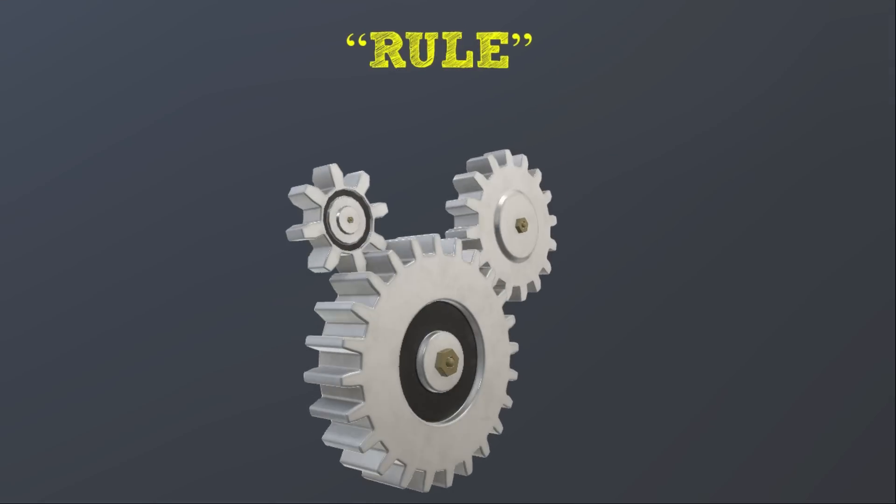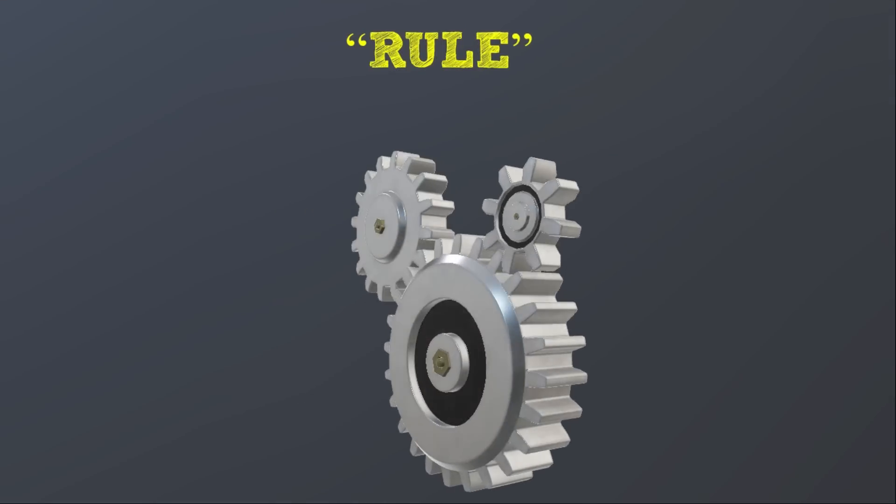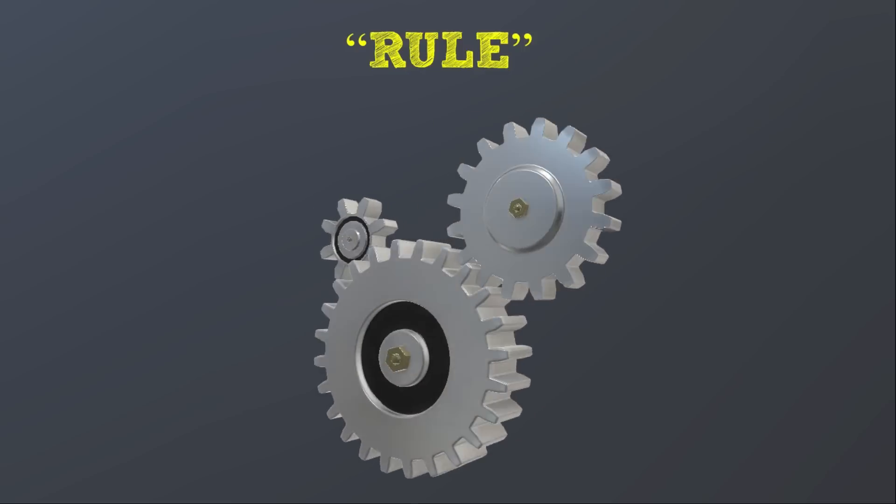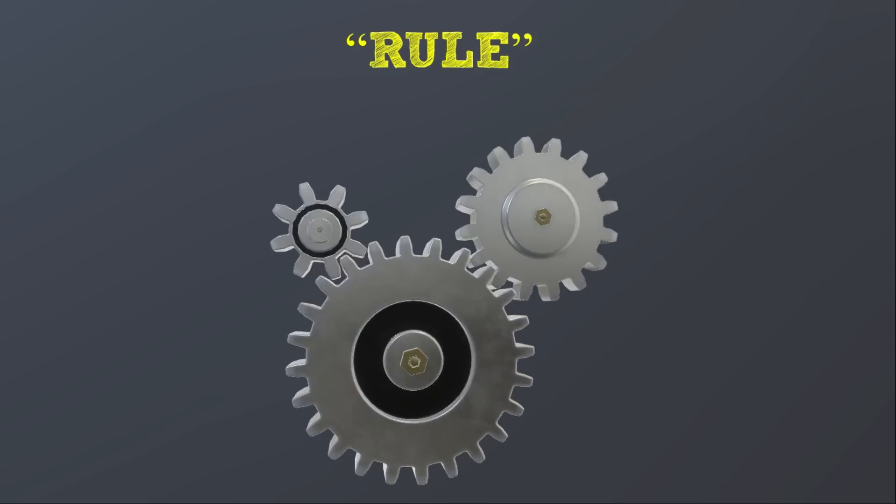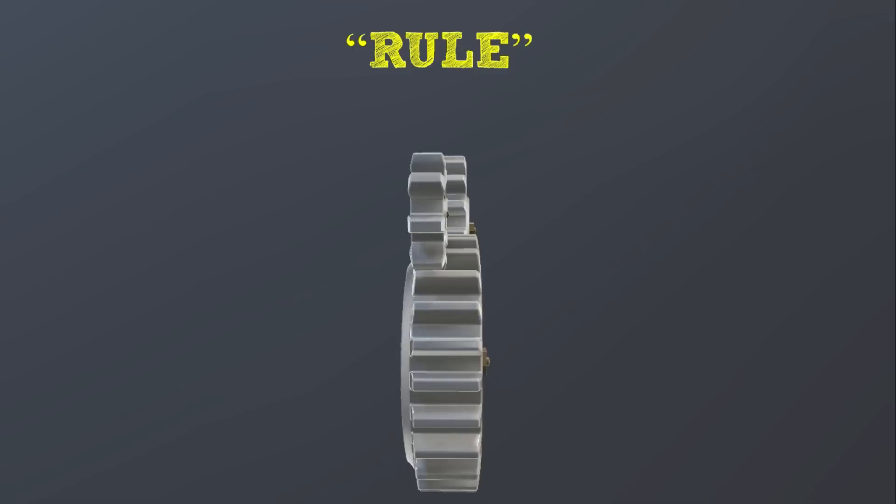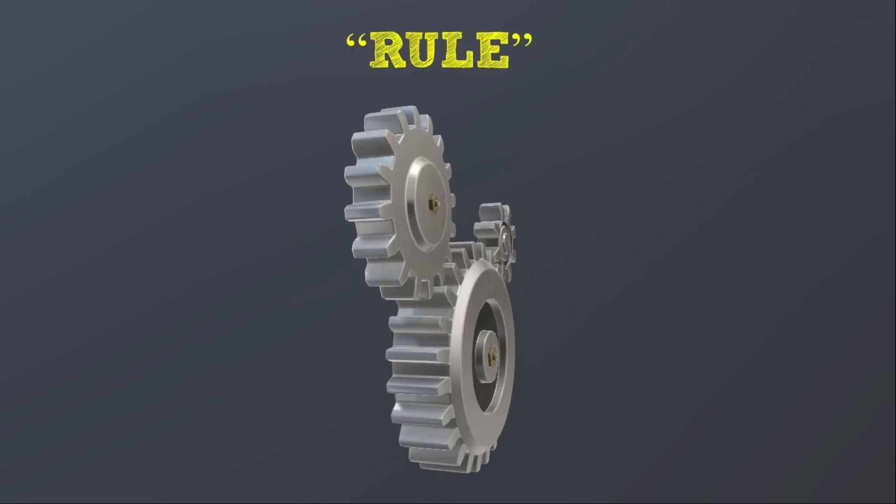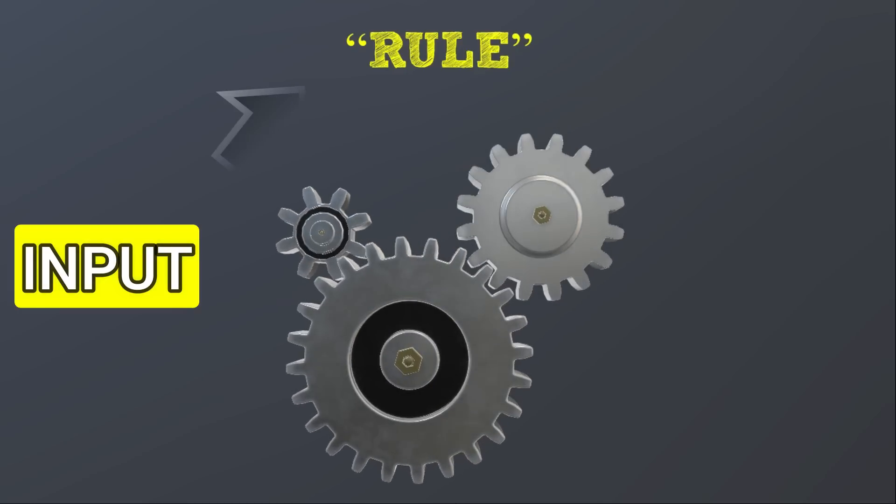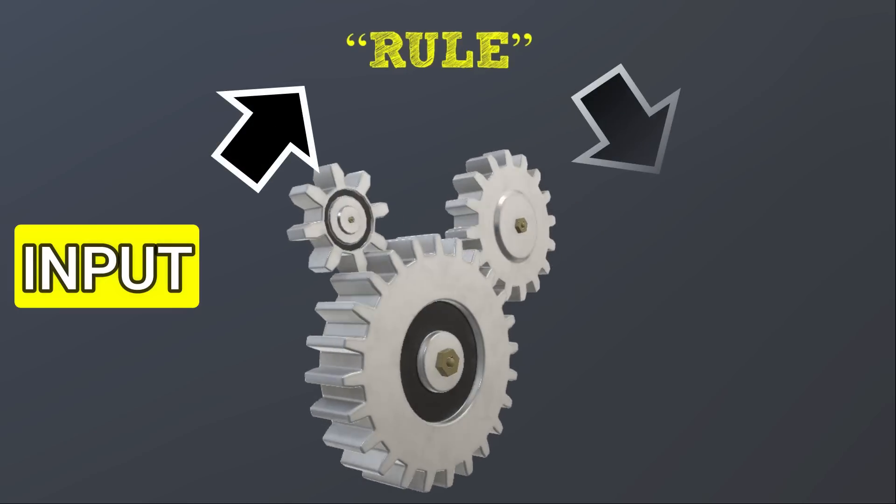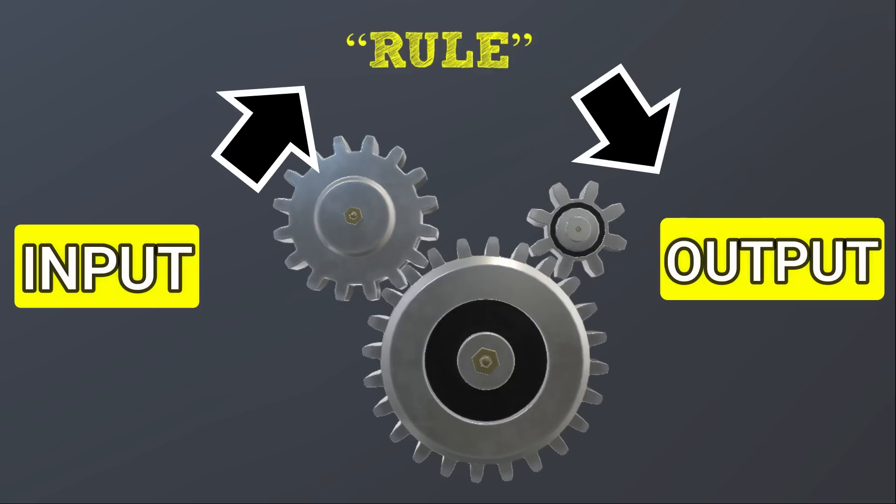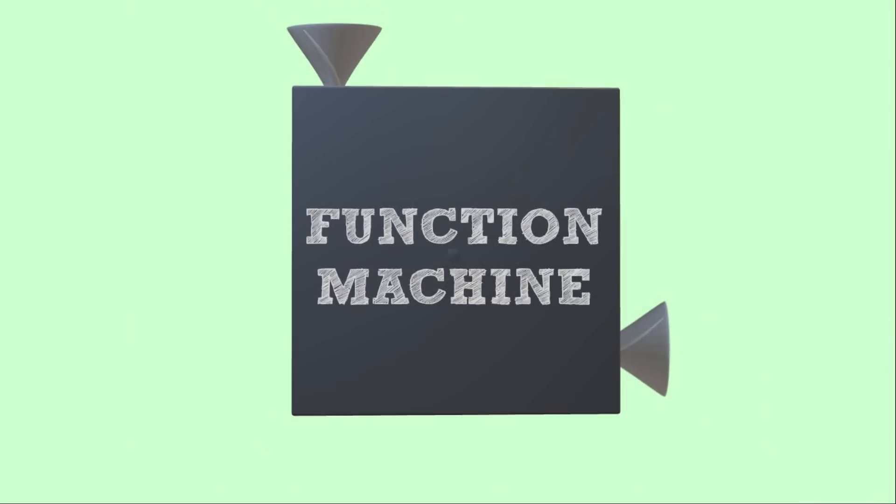Inside our function machine, there's a rule. Every time our input gets inside the machine, it follows a rule that leads to our results or outputs. I repeat, our input gets in, follows the rule, and then gets out as an output. Remember our function machine to recall the meaning of functions.